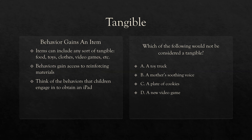Think of the behaviors that children engage in to obtain an iPad — arguably the most common tangible these days that evokes these types of behaviors. If you forget what tangible is, just think iPad. A kid does a tantrum, so you hand them the iPad — they gain that tangible, maintaining the behavior. Which of the following would not be considered a tangible? A toy truck — you can hold it, it's tangible. A mother's soothing voice — you can't hold it; that's more along the lines of attention. A plate of cookies — you can hold and eat it, it's a tangible item. And a new video game — again, think iPad when you think tangible. Don't confuse it with attention.